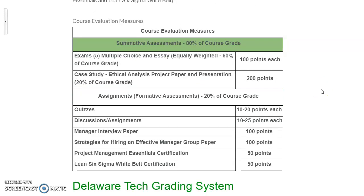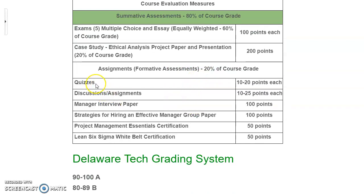Here's what your grade is based on — these are called course evaluation measures. You'll have five exams worth 100 points each, which are summative assessments. Together with a case study, 80% of your course grade is based on exams and the case study. Each exam has a multiple choice and an essay portion — you must complete both parts by the due date. The case study is an ethical analysis paper and presentation worth 200 points. The remaining 20% consists of formative assignments: quizzes, discussions, various assignments, two smaller papers, a manager interview paper, a group paper, and two certifications.